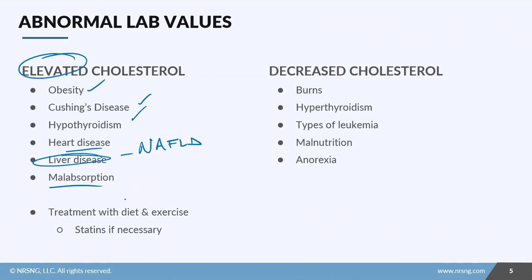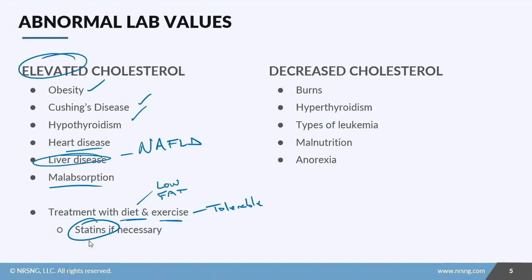The main treatment for elevated cholesterol starts with diet and exercise — simple modifications the patient can do at home. We aim for a low-fat diet, and exercise should be tolerable for the patient while also improving cardiovascular function. Statins, such as atorvastatin or Lipitor, are considered on a case-by-case basis, as providers typically don't jump straight to medication when diet and exercise are things the patient can control.